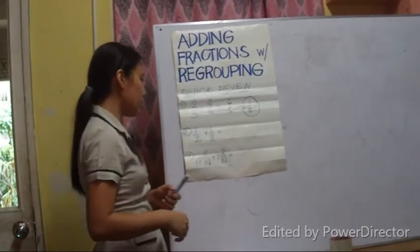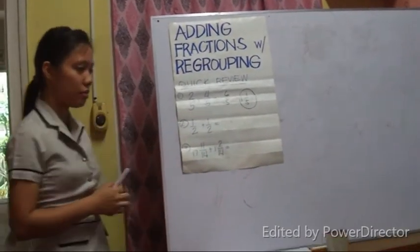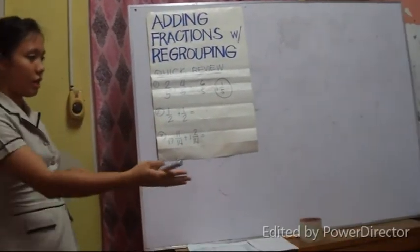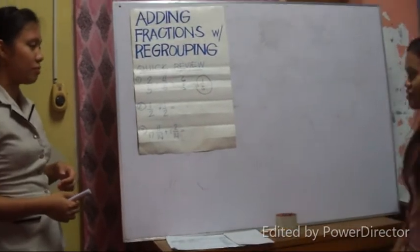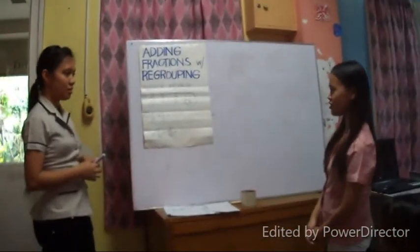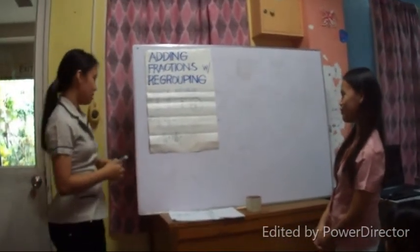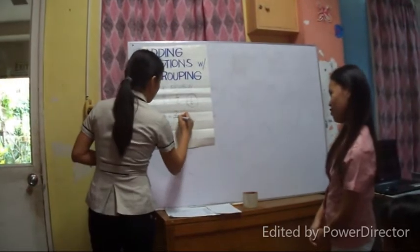How about number two? Anyone? One half plus one half is two over two, which is one. Correct.